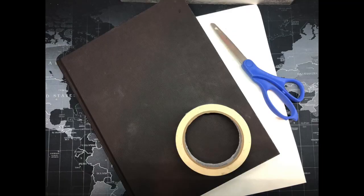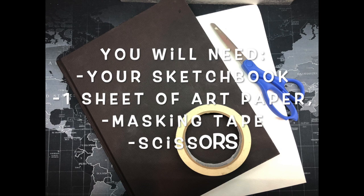Today we're going to learn how to create a hinge three-page journal spread. First thing you're going to need to do is grab your sketchbook, sheet of art paper, masking tape, and a pair of scissors.